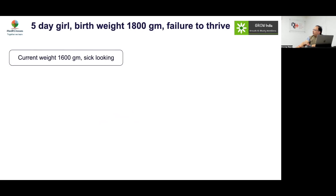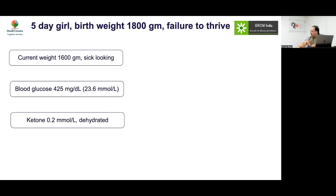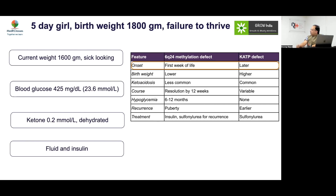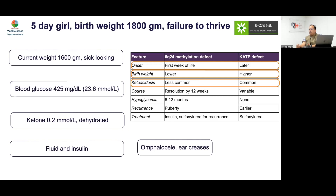Case 3: A 5-day-old girl, birth weight 1800 g, now 1600 g, sick-looking, high sugars, ketones negative, dehydrated. Managed with fluids and insulin. Is this transient or permanent neonatal diabetes? Very early onset and absence of ketosis favor a transient form. First-week-of-life onset, lower birth weight, and less common ketoacidosis all point in that direction. Look for features of imprinting disorders such as omphalocele and ear creases. These were present, confirming a 6q24 defect. Expect improvement followed by possible recurrence in adolescence.